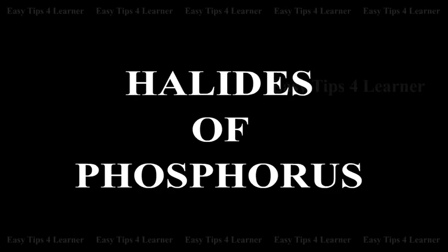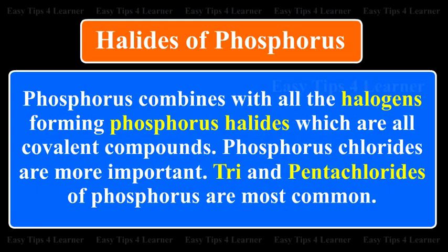Halides of Phosphorus. Phosphorus combines with all the halogens forming phosphorus halides which are all covalent compounds. Phosphorus chlorides are more important. Tri- and pentachlorides of phosphorus are most common.